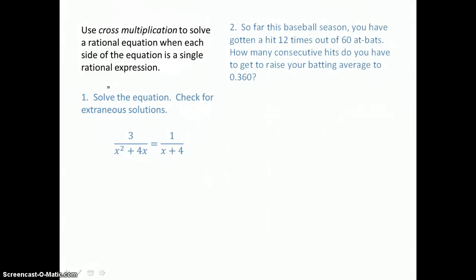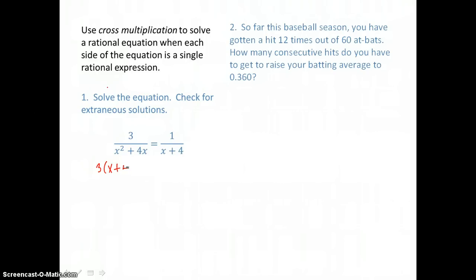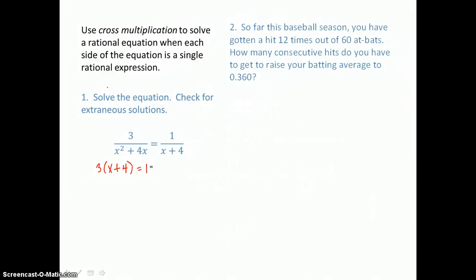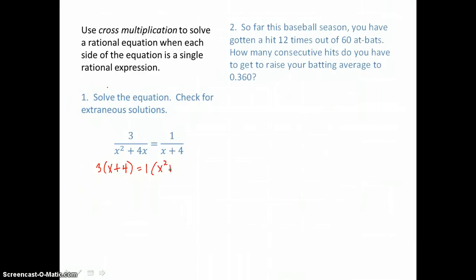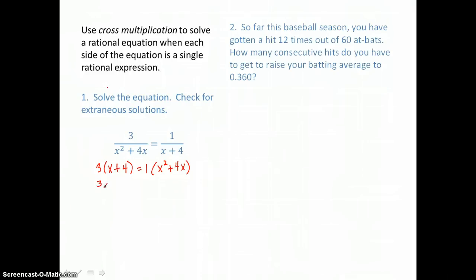So we have 3 times x plus 4 — that's one cross product — and it's equal to 1 times x squared plus 4x. Now we want to distribute and get rid of parentheses. We have 3x plus 12 on the left, and on the right we have x squared plus 4x.